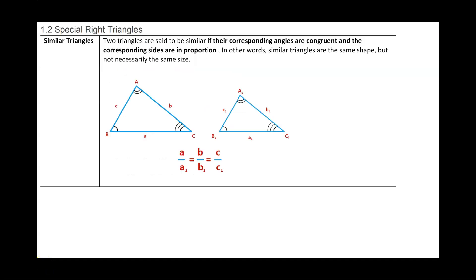In section 1.2, we will talk about special right triangles, but start with similar triangles. Two triangles are said to be similar if their corresponding angles are congruent and the corresponding sides are in proportion. In other words, similar triangles are the same shape, but not necessarily the same size.